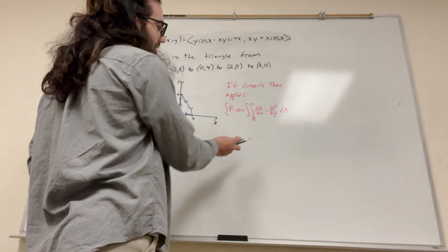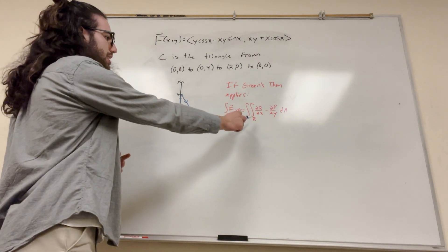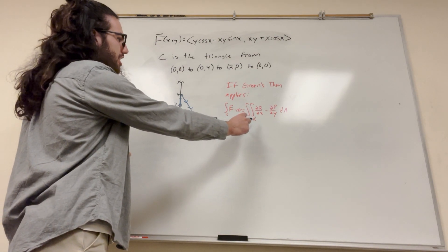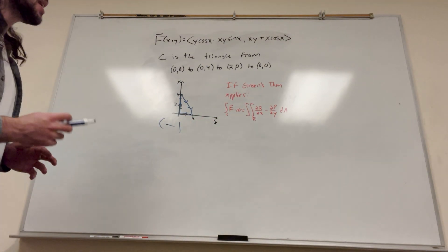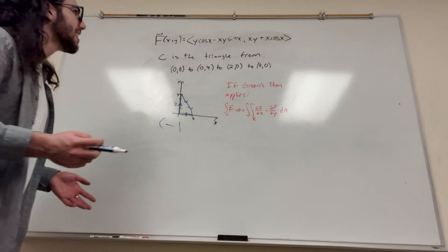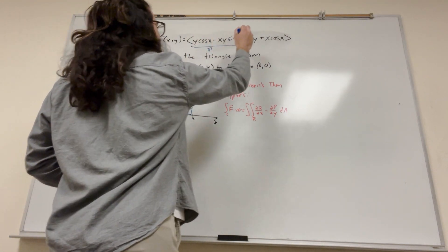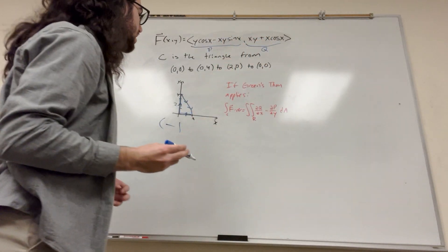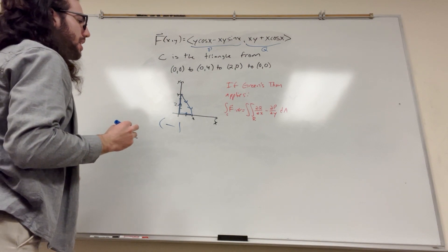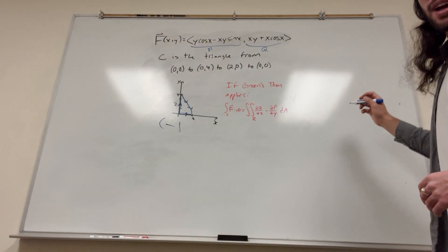Alright, so if Green's Theorem applies, the line integral is equal to the double integral of the region of the derivative of Q with respect to x minus the derivative of P with respect to y over the region. So let's go ahead and solve it. Let's see.